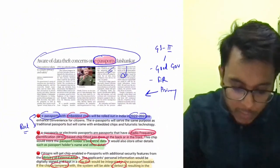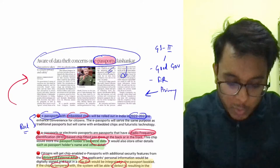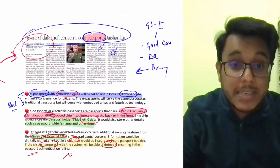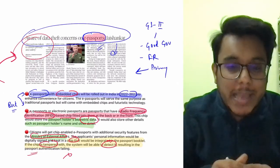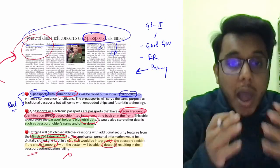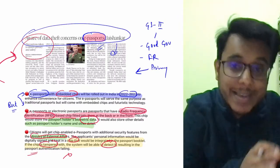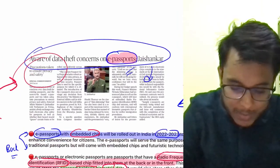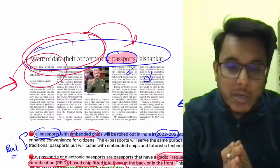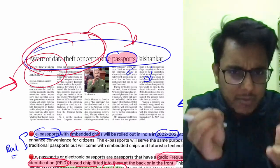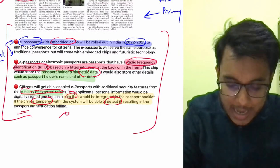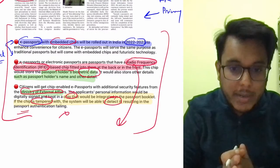A question was raised in Parliament: what precautions are being taken to ensure privacy and safety of data stored in the embedded chip? The government has said they are aware of the data theft concerns and have addressed that particular thing. This e-passport initiative and RFID technology are very important to keep in mind.